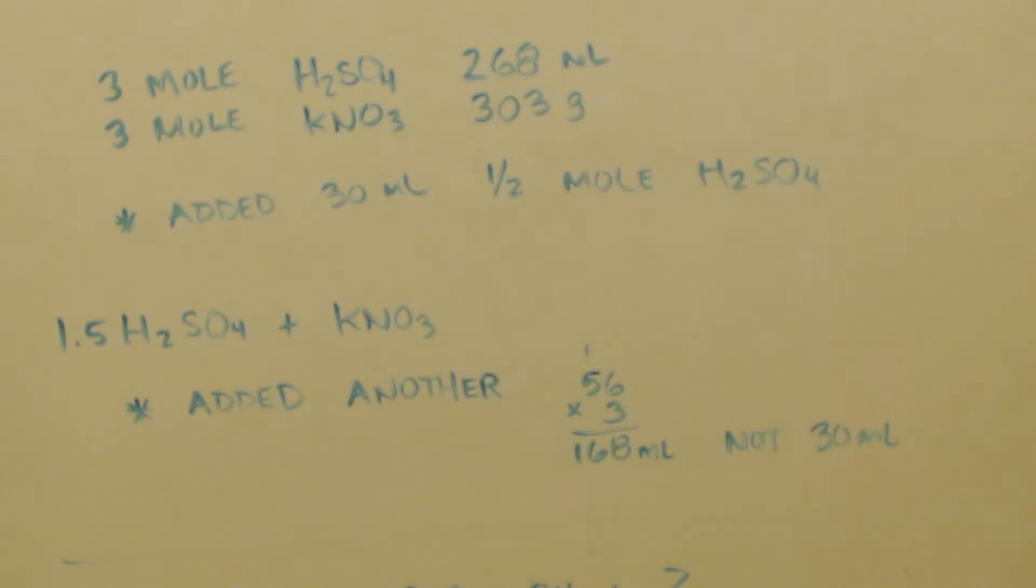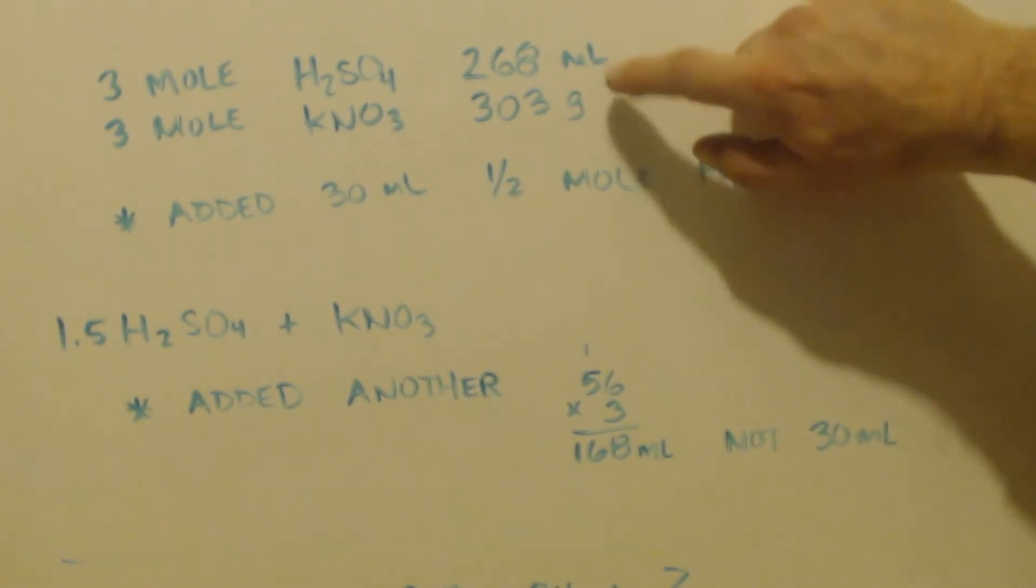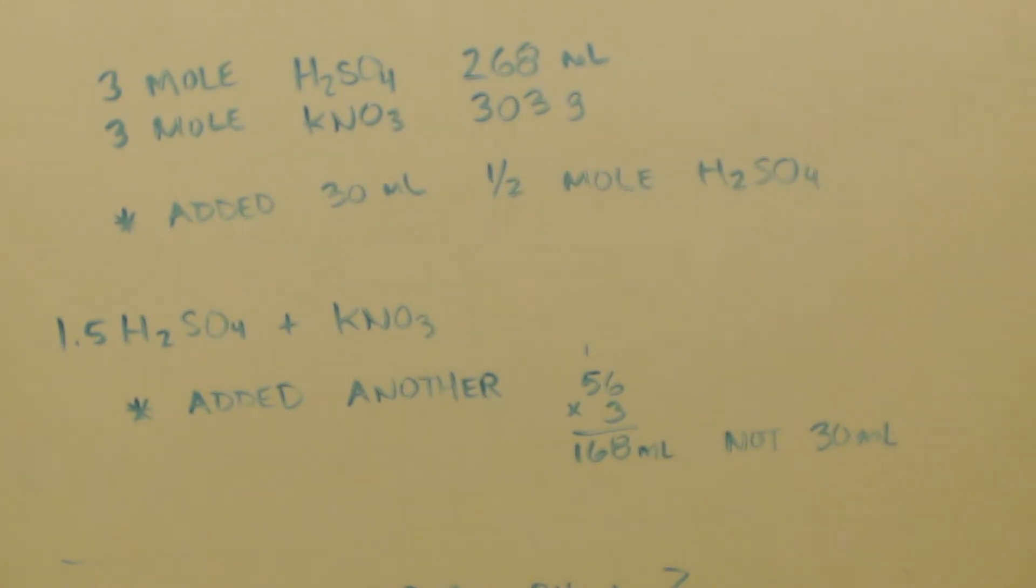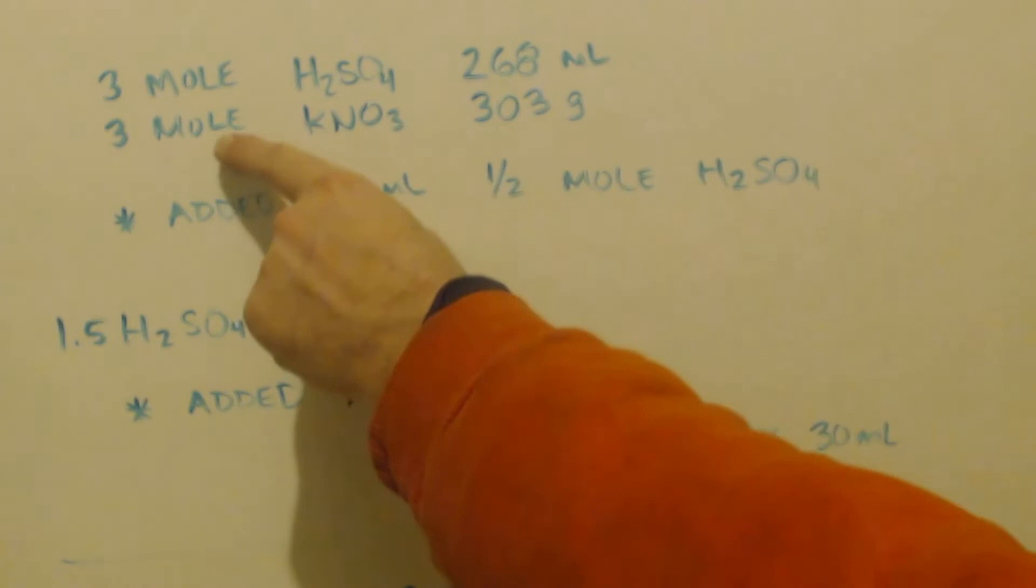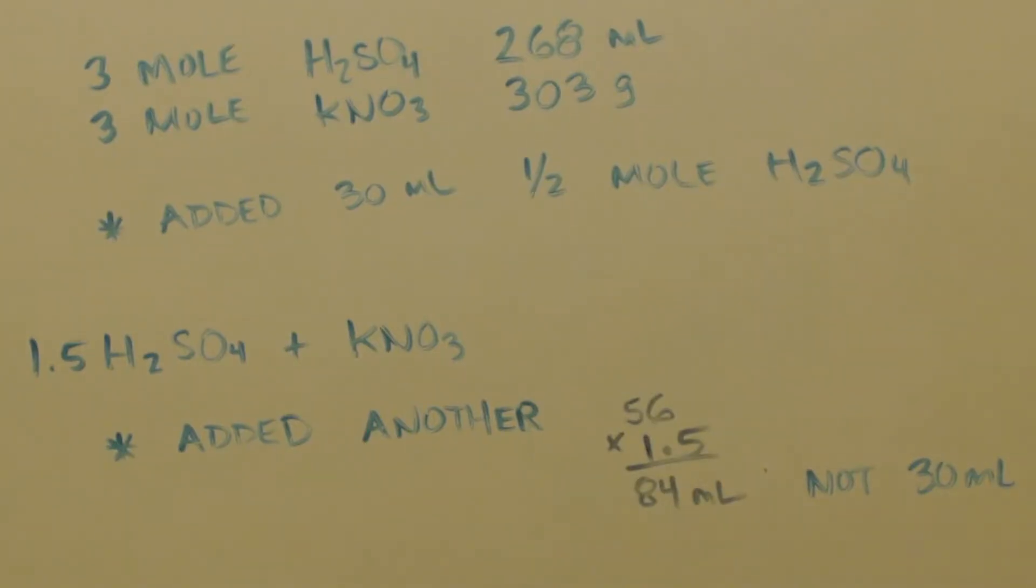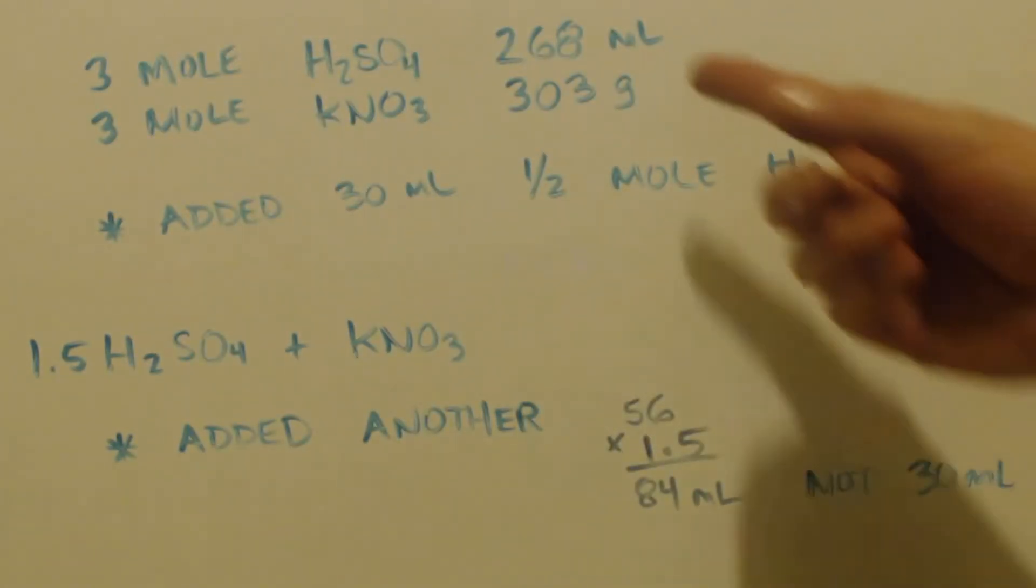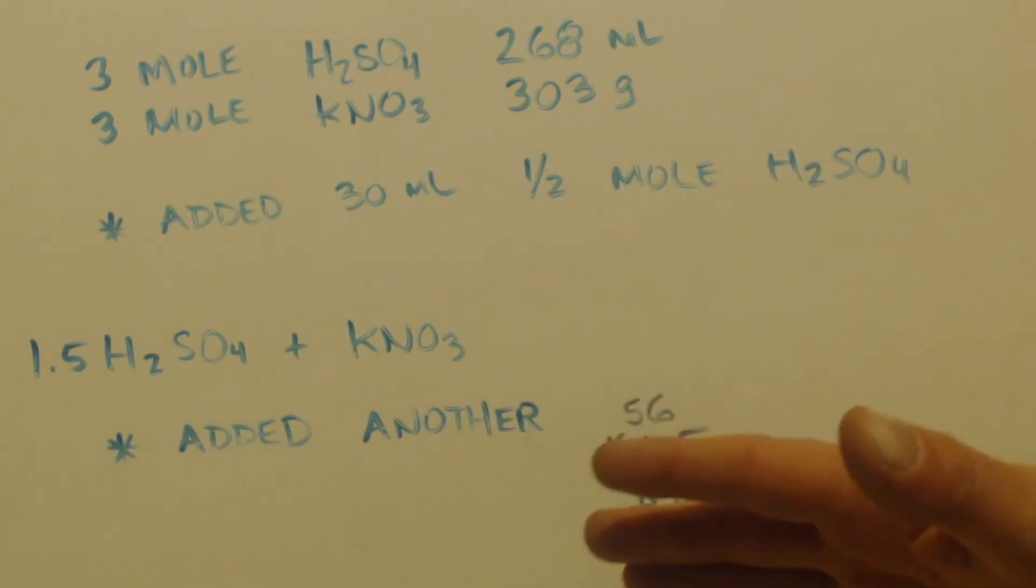And I put in 303 grams and 268 milliliters, not thinking I'm supposed to add in more. And in the middle of the distillation, when I was doing this, I was like wait, I want to see what happens if I add even more sulfuric acid in. So I stopped the distillation, I added 30 more milliliters, a half a mole, not realizing I never figured it out. I was still doing a one to one ratio.